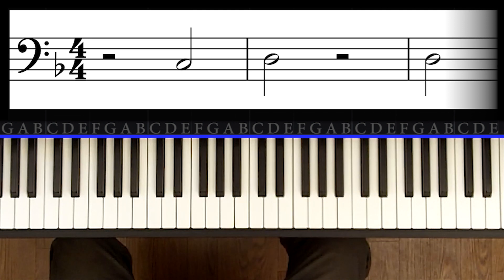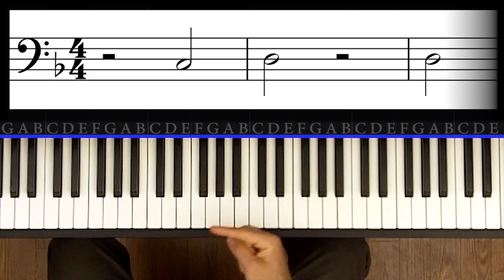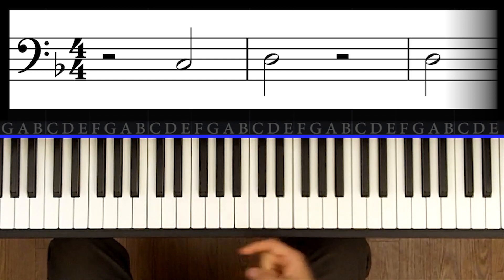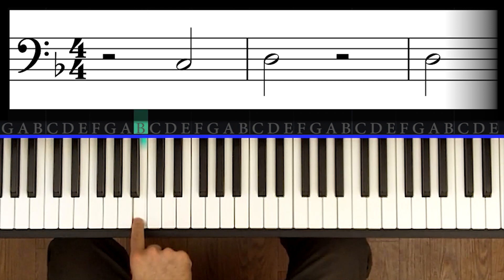But because there's that symbol there, it's telling you to play it flat. So to play it flat, you play it a little bit to the left, the smallest distance, a half step lower in pitch, or to the left of the keyboard. So if normally you would play a B, and you would actually play this one.